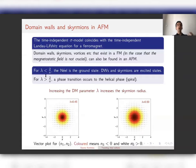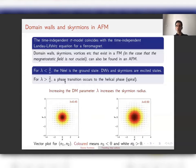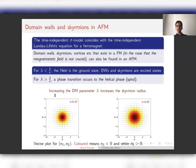For small DM parameter, the uniform Néel state is the ground state, and domain walls and skyrmions are excited states over this Néel state. For large DM parameter greater than 2/π, a phase transition occurs to the helical phase — a spiral phase. Here are pictures of a skyrmion for small and larger DM parameter; for larger lambda, the skyrmion radius increases and diverges to infinity at the critical DM parameter 2/π, so the skyrmion disappears for lambda above that.